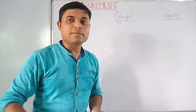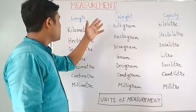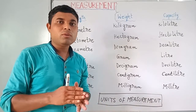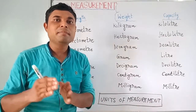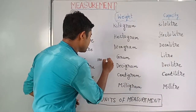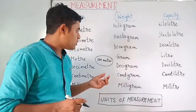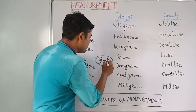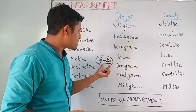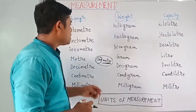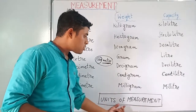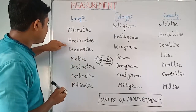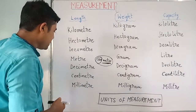To express the measurement of length, weight, and capacity, we need units. For example, we say 100 meters — 'meters' is the unit. Units of length are: kilometer, hectometer, decameter, meter, decimeter, centimeter, and millimeter.